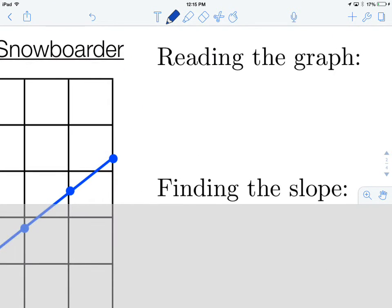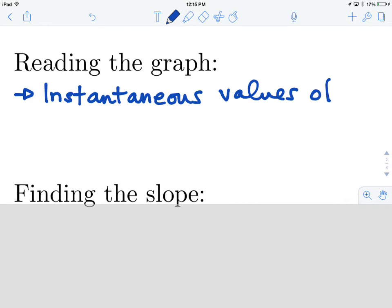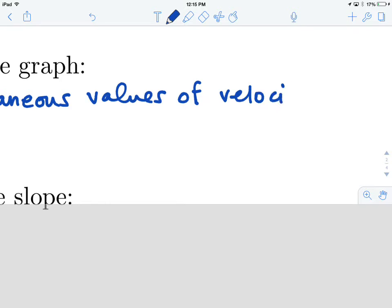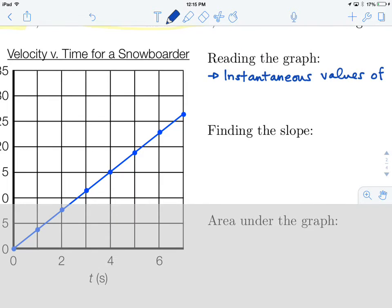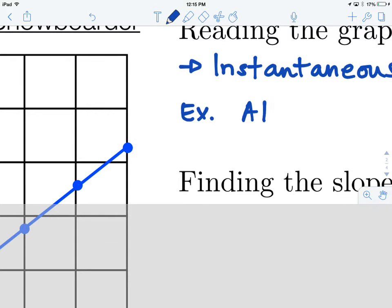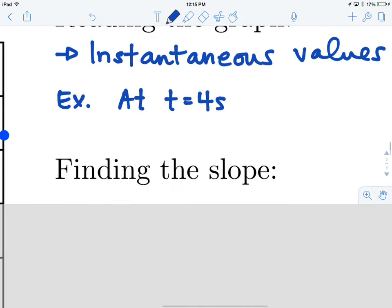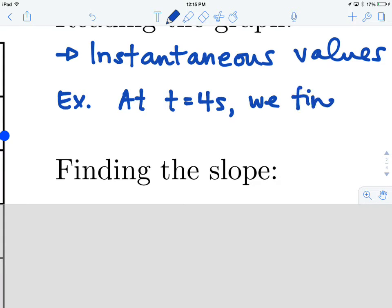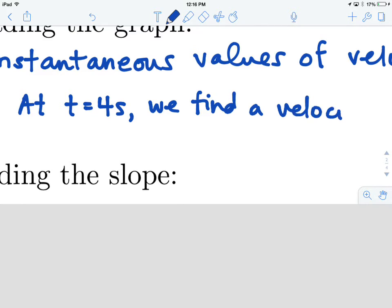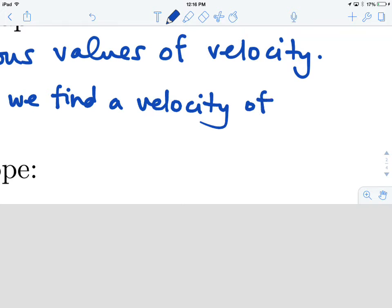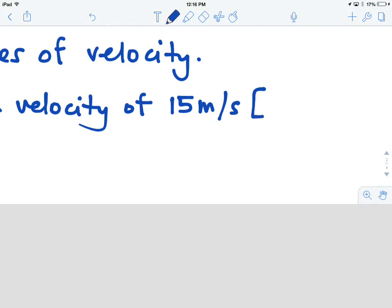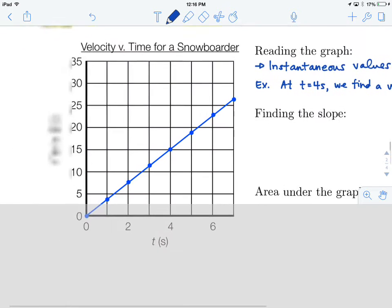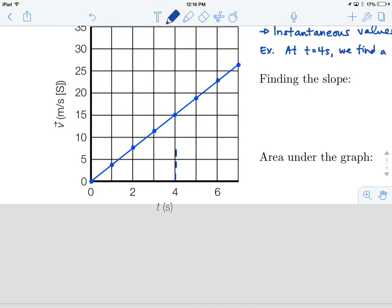So let's take a look at what we see here. First of all, when we read the graph, we get instantaneous values of velocity. And as an example of this, we could say at t equals 4 seconds, we find a velocity of 15 meters per second south. So we'll just kind of come over here, come up like this, 4 seconds, trace over. Of course, we find 15.